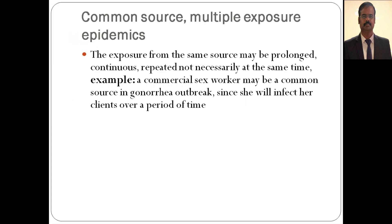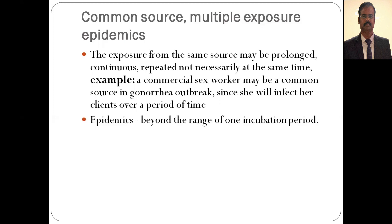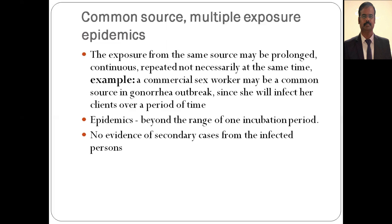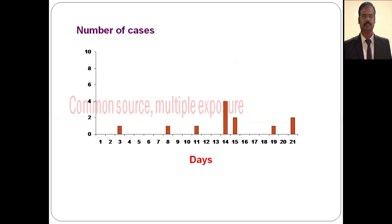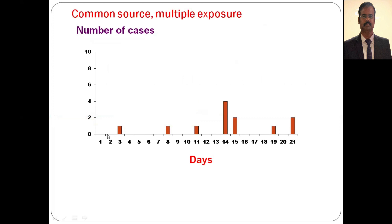In common source multiple exposure, the exposure from the same source may be prolonged, continuous, or repeated — not necessarily at the same time. Not all cases occur simultaneously, so the epidemic crosses beyond one incubation period. There is no evidence of secondary cases from infected persons, but there will be secondary curves. The characteristic epidemic curve shows multiple peaks.